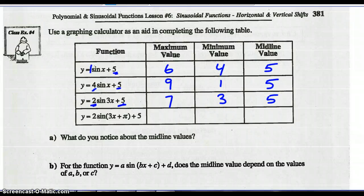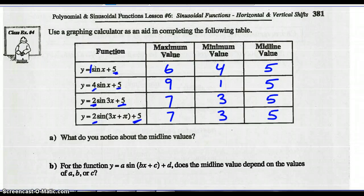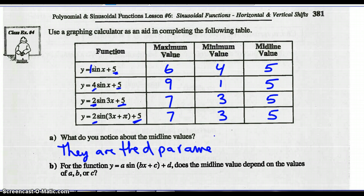For the last equation: amplitude is 2, shift is 5 up, so maximum is 7, minimum is 3, and midline is 5. What do we notice about the midline values? They are the d parameter, and they are all 5 in the table above.